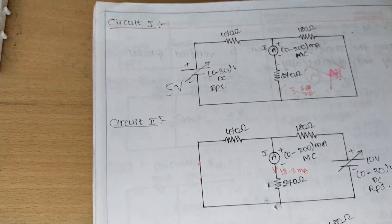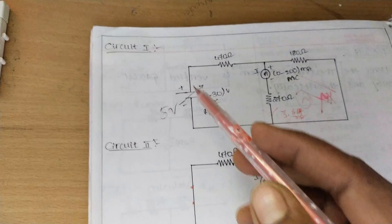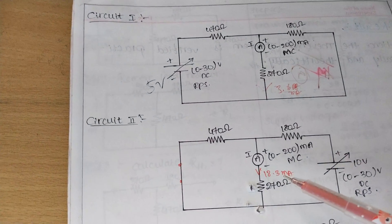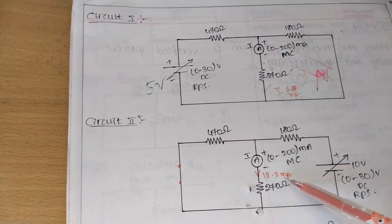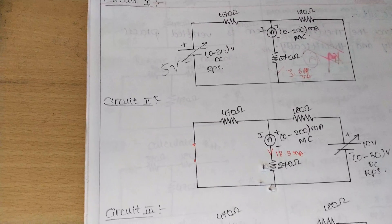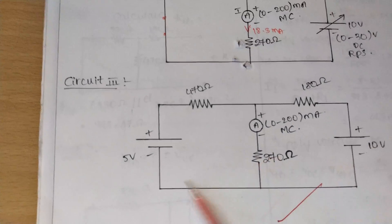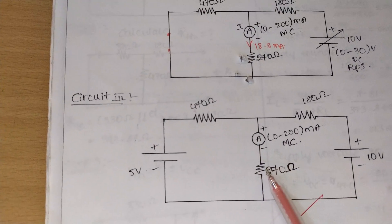Now for the final step, when both sources are acting simultaneously, we calculate the current flowing through the 270 ohm resistance.